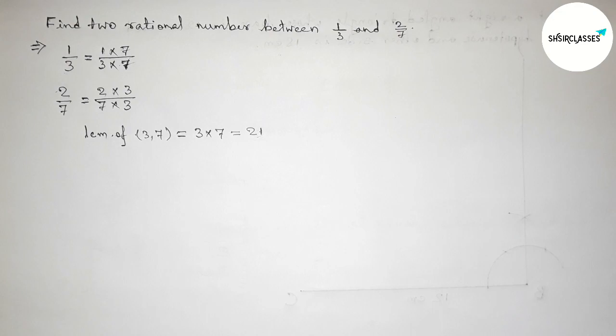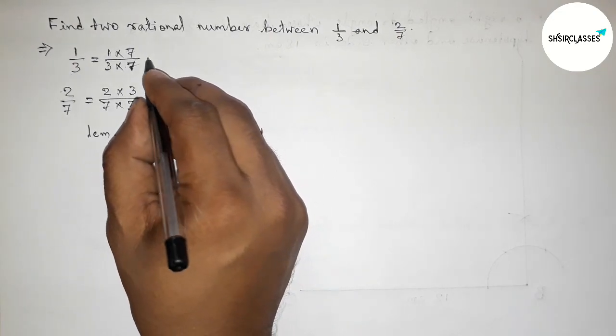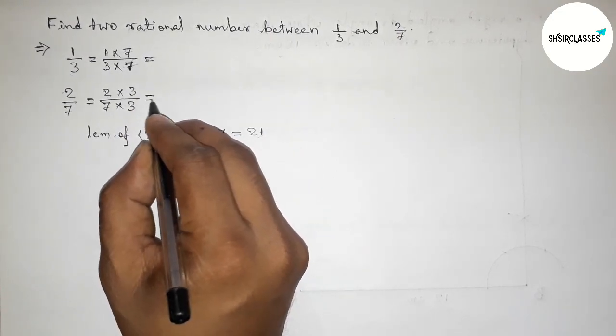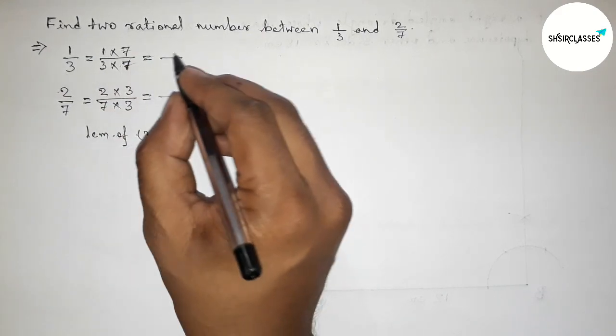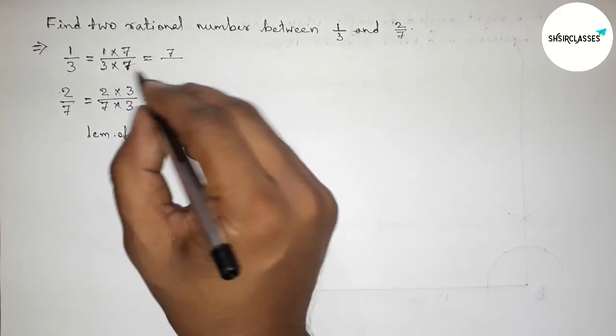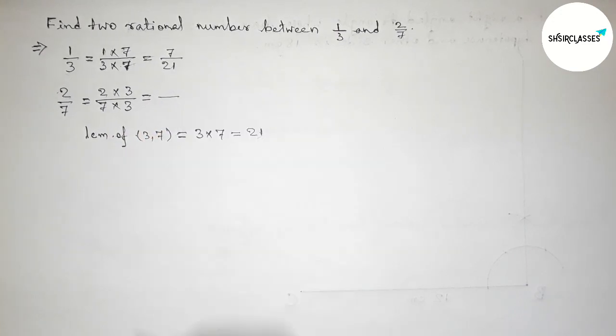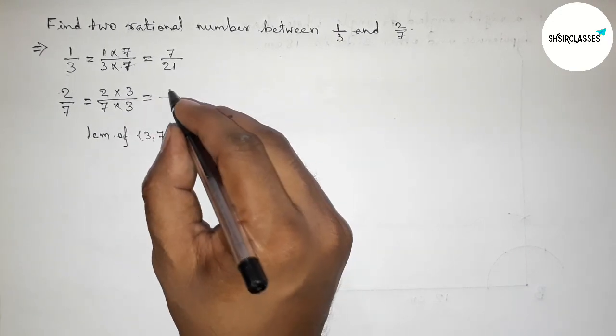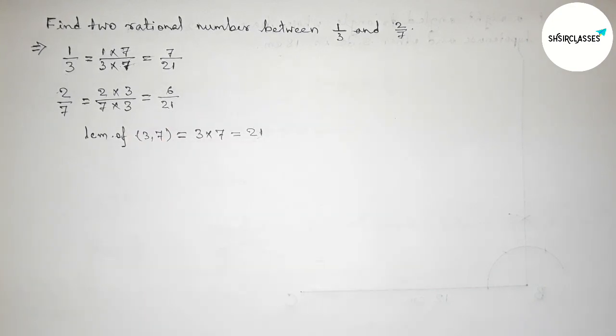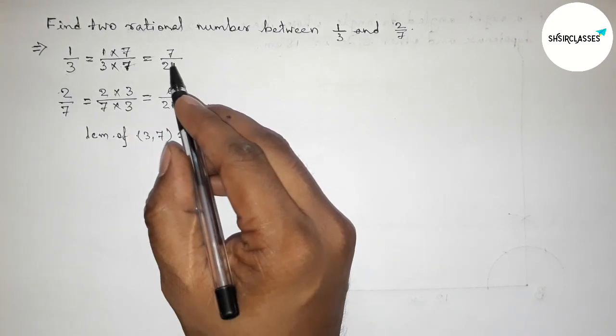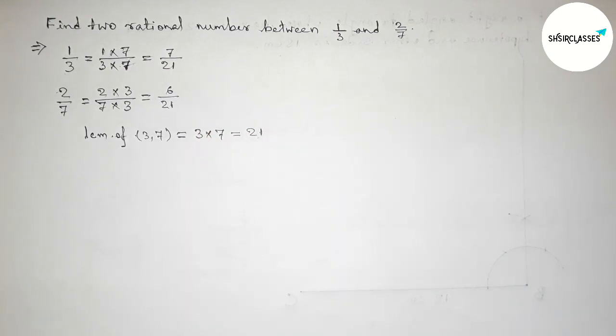So now equals to here, this is 7 × 1 = 7 and 7 × 3 = 21, and this is 6/21. So here both the denominators are 21 and equal.